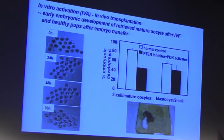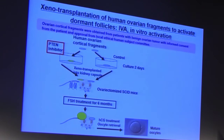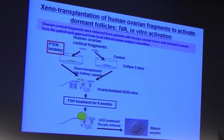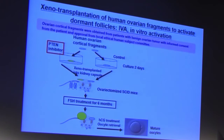We then moved on to a translational study using human ovarian cortex, performing xenotransplantation of human ovarian fragments to activate dormant follicles. Human ovarian cortical fragments were obtained from benign ovarian tumor patients with informed consent and IRB approval, then divided into control and PTEN inhibitor treatment groups. At that time we used just the PTEN inhibitor, though we later confirmed that combined PTEN inhibitor and PI3K activator treatment was more effective. After two days of culture, we xenotransplanted the ovaries into the kidney capsule of ovariectomized SCID mice to avoid rejection between human and mouse tissue.